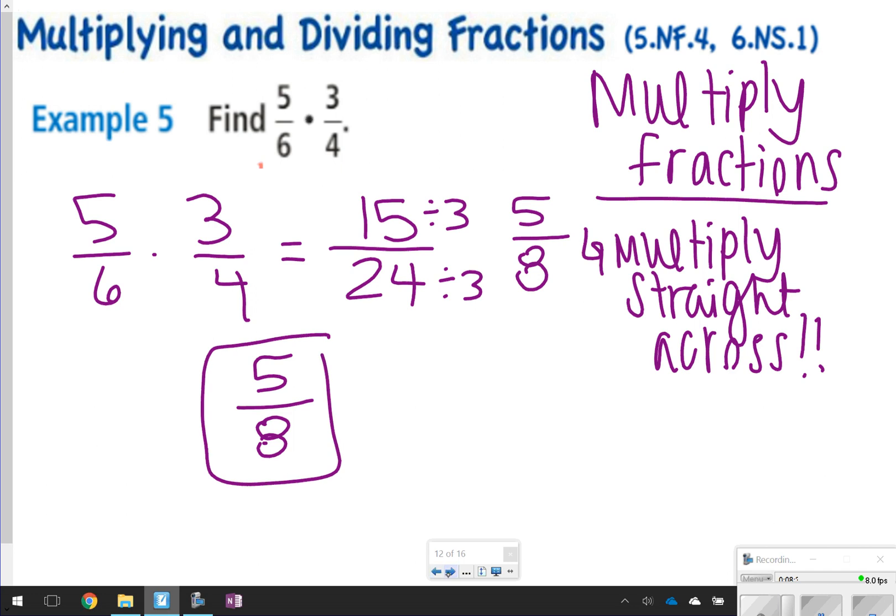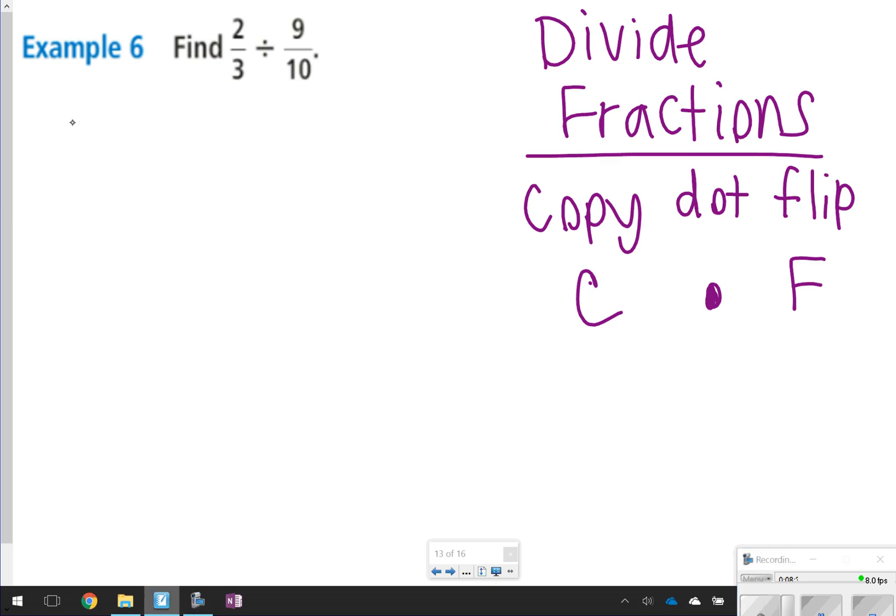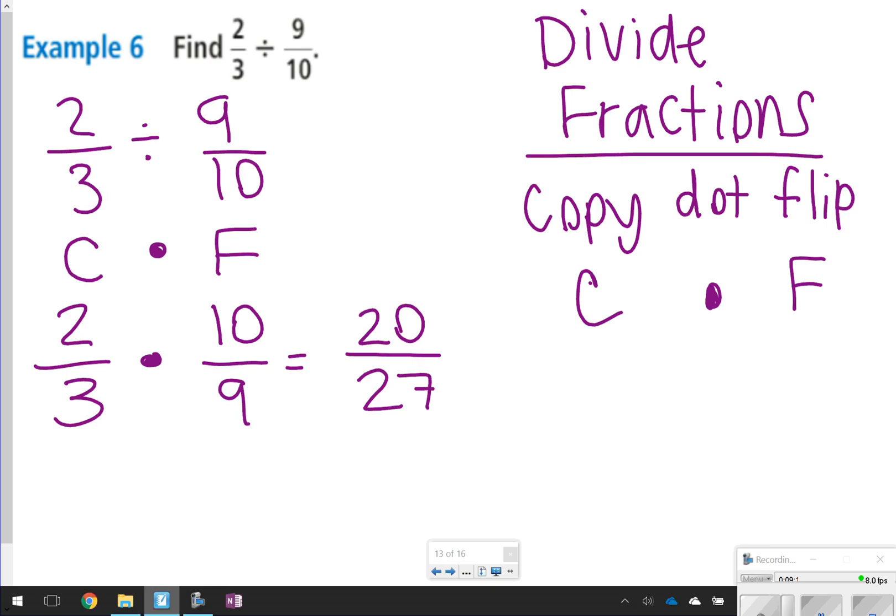So multiplying fractions, multiply straight across. When you divide fractions, you're going to do copy dot flip. This is what it looks like. I have the division problem, 2 thirds divided by 9 tenths. Copy dot flip means I'm going to copy the first fraction, put a dot instead of the division sign for multiplication, and flip the second fraction. You might have learned it some way else, but copy dot flip is how we talk about it in our class. 2 thirds times, flipping would be 10 over 9, and then I multiply. 2 times 10 is 20. 3 times 9 is 27. 20 and 27 don't have anything in common that I could simplify, so that would be my answer. So dividing fractions, you're going to copy dot flip.